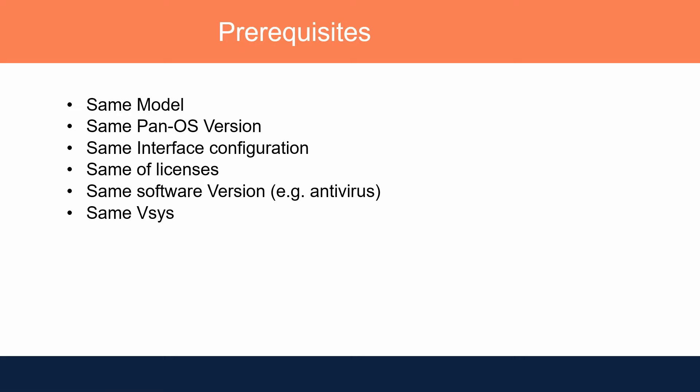To configure firewalls in HA, there are some prerequisites. The firewall model should be the same, the operating system should be the same, firewall interfaces and their configuration should be identical, and firewall licenses should be activated on both peers. So if firewall A is active and firewall B is passive, both should have the same license package.